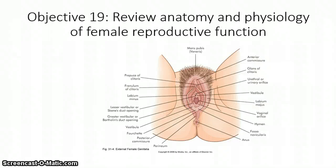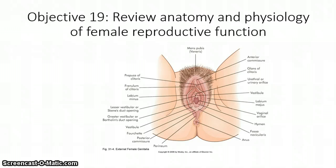Moving on to the internal structures: the internal structures provide the passageway for menstrual flow and are also part of the birth canal. You have the vagina, which is a fibromuscular collapsible tubular structure. During reproductive years it develops rugae, or transverse folds, that help allow for childbirth. The uterus is basically an upside-down pear that sits midline in the pelvic cavity.